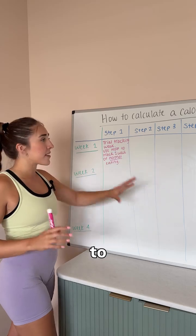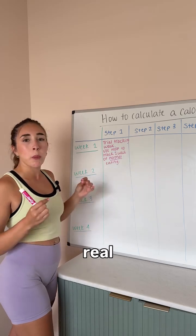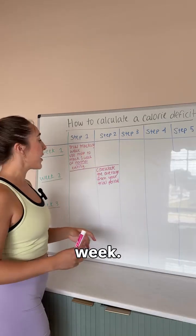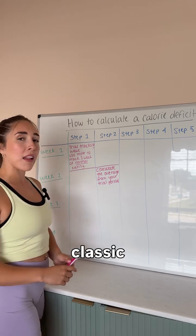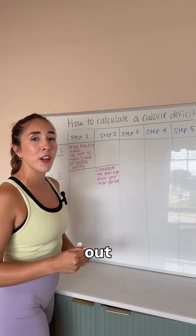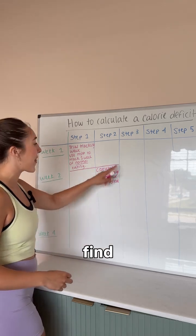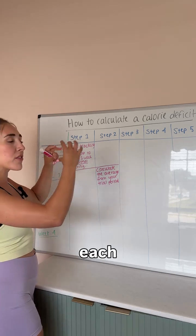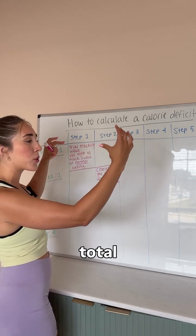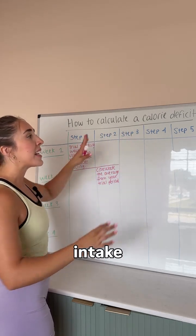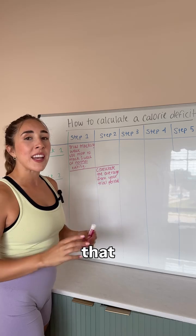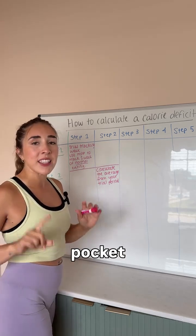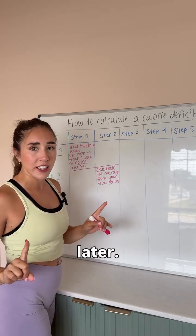Step into the next month to see real progress. Step two: after trial tracking for a week, we're gonna do some classic middle school math, whip out our calculators, and find the average from your trial period — adding each of the seven days' total calorie intake and dividing it by seven. Once you find that number, I want you to write it down and stick it in your back pocket and save it for later.